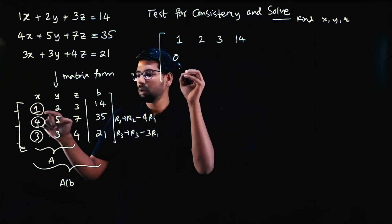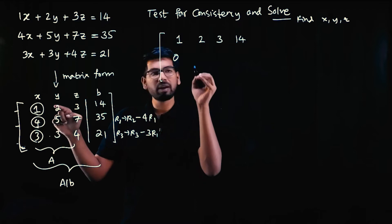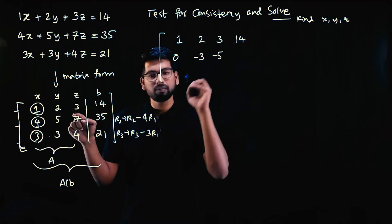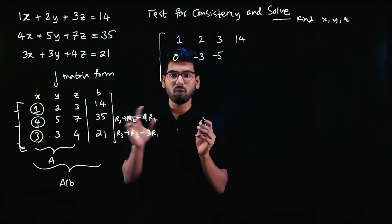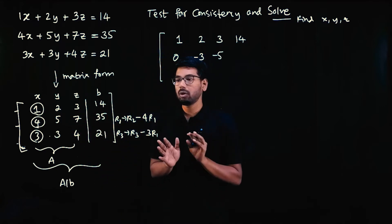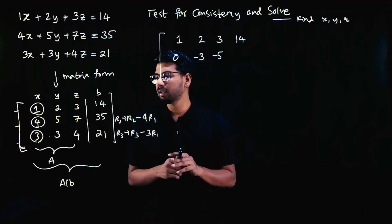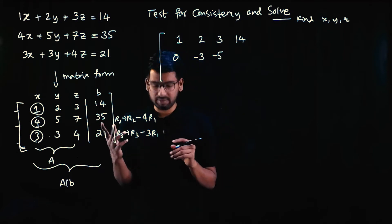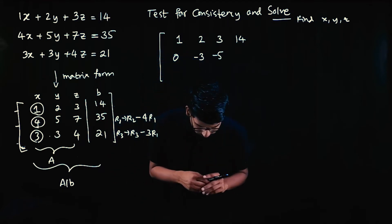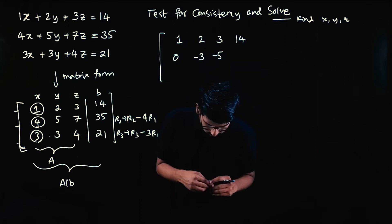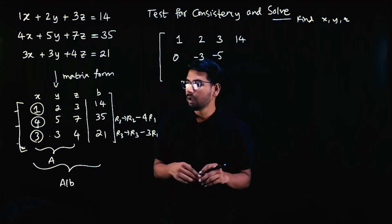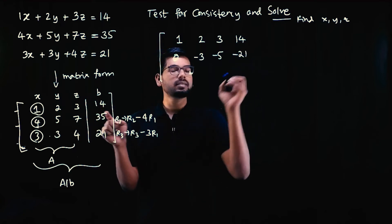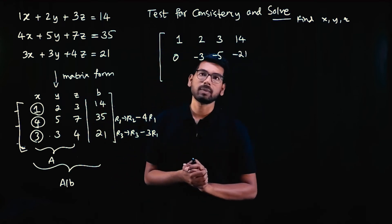First row: no operations, so 1, 2, 3, 14. Second row: R2 minus 4R1. 4 times 1 is 4, 4 minus 4 is 0. 4 times 2 is 8, 5 minus 8 is minus 3. 4 times 3 is 12, 7 minus 12 is minus 5. 4 times 14 is 56, use your calculator, don't make mistakes. 35 minus 56 is minus 21.